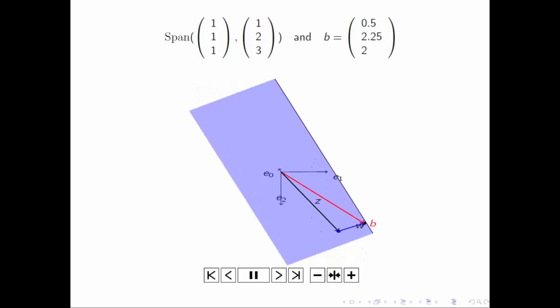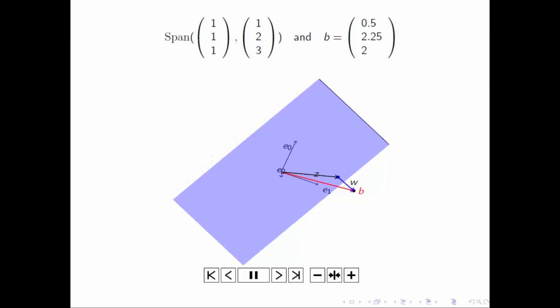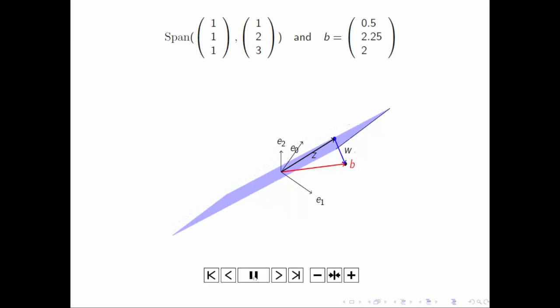And what you notice is that the vector B is not in the span of the two columns. Let's see here if we can stop this.